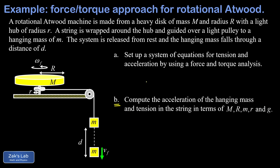In part A we're asked to set up a system of equations for the tension and the acceleration using a force and torque analysis. We'll apply Newton's second law to the hanging mass, and then apply the rotational equivalent — tau equals I alpha — to the heavy disc. This gives us a system of two equations and two unknowns: the tension in the string and the acceleration of the hanging mass.